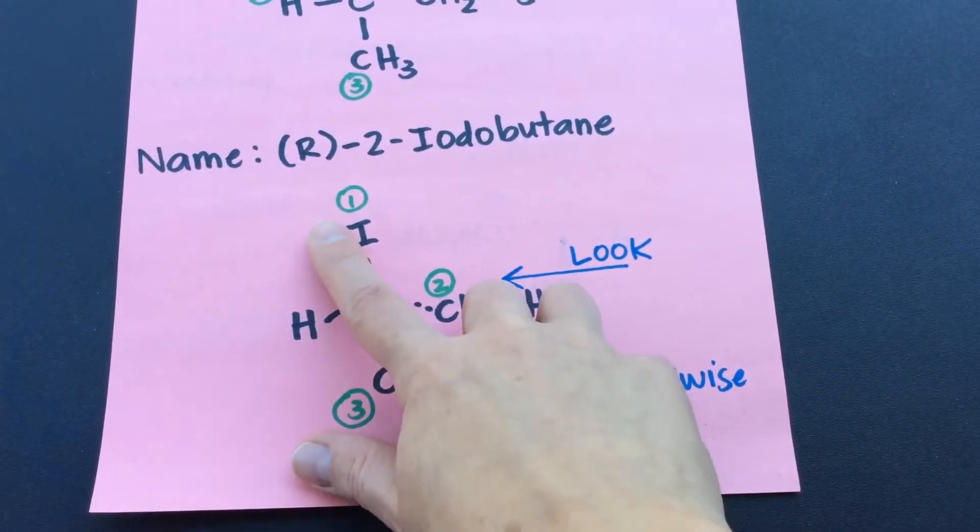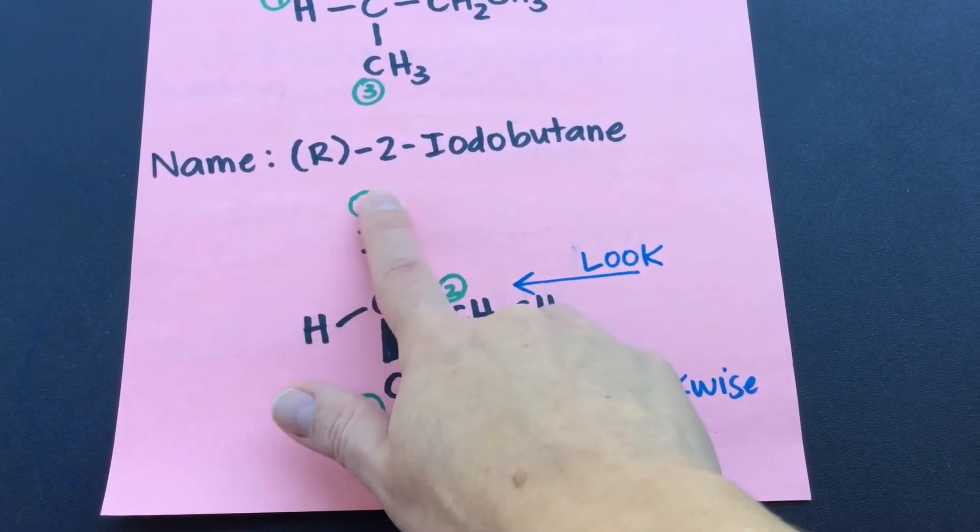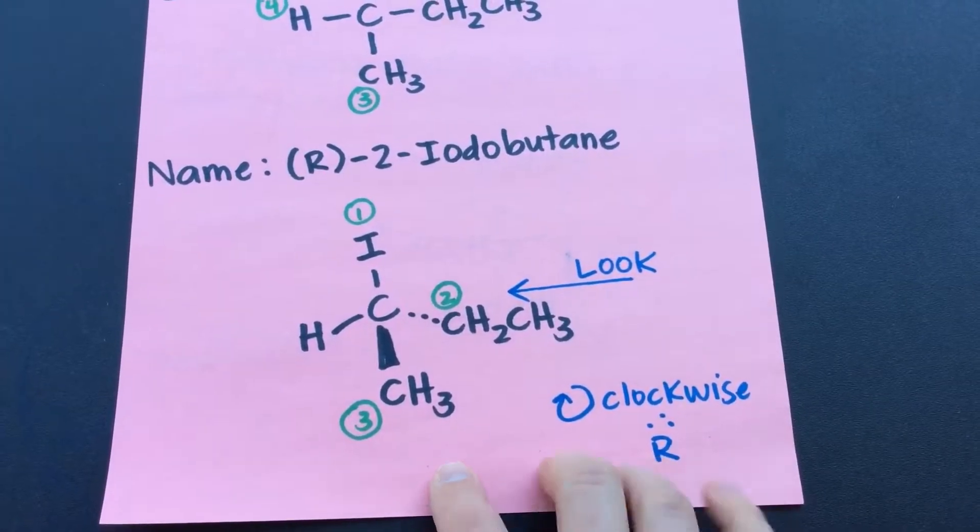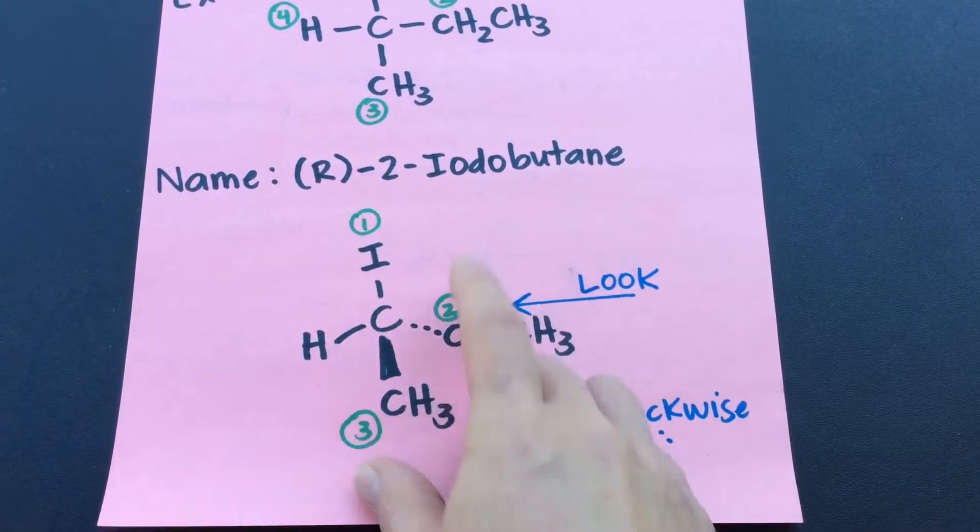Right, that's clockwise, yes. So we use the R designation. So that's R-2-iodobutane.